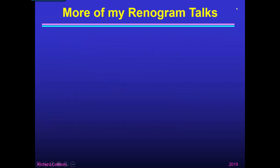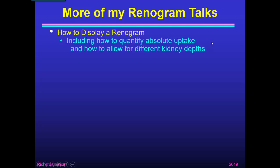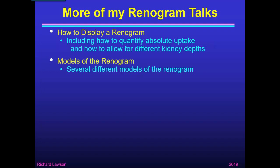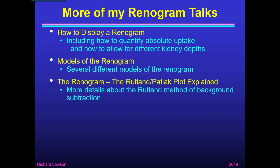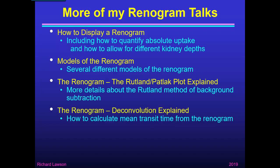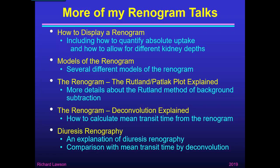If you found this talk interesting, you may like to watch some more of my renogram talks. I have a talk on how to display a renogram, which includes how to quantify absolute uptake — not just relative function — and how to allow for kidneys that might be at different depths. I have another talk on models of the renogram. The renogram Rutland-Patlak plot explained gives more details about the Rutland method of background subtraction. Renogram deconvolution explained shows how to calculate mean transit time from the renogram. And I have another one on diuresis renography, which compares diuresis renography with mean transit time calculated by deconvolution.